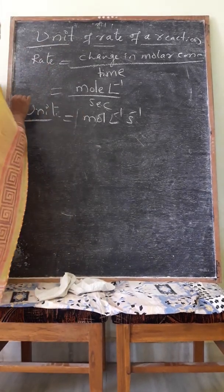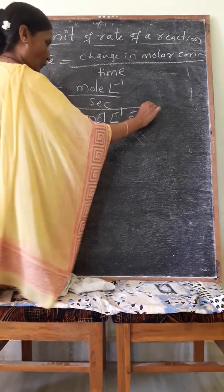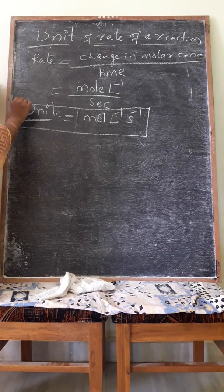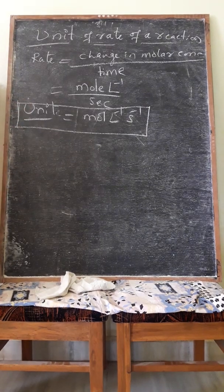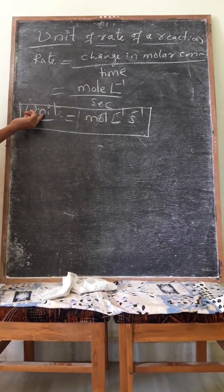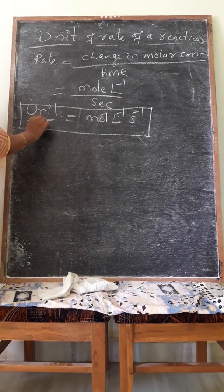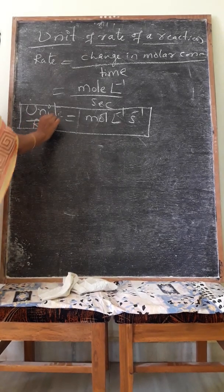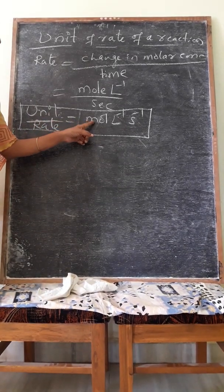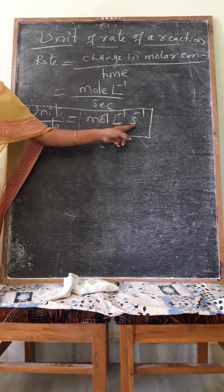The time unit can be per second, per minute, or per hour. But usually, the unit of rate is taken as mole per liter per second.